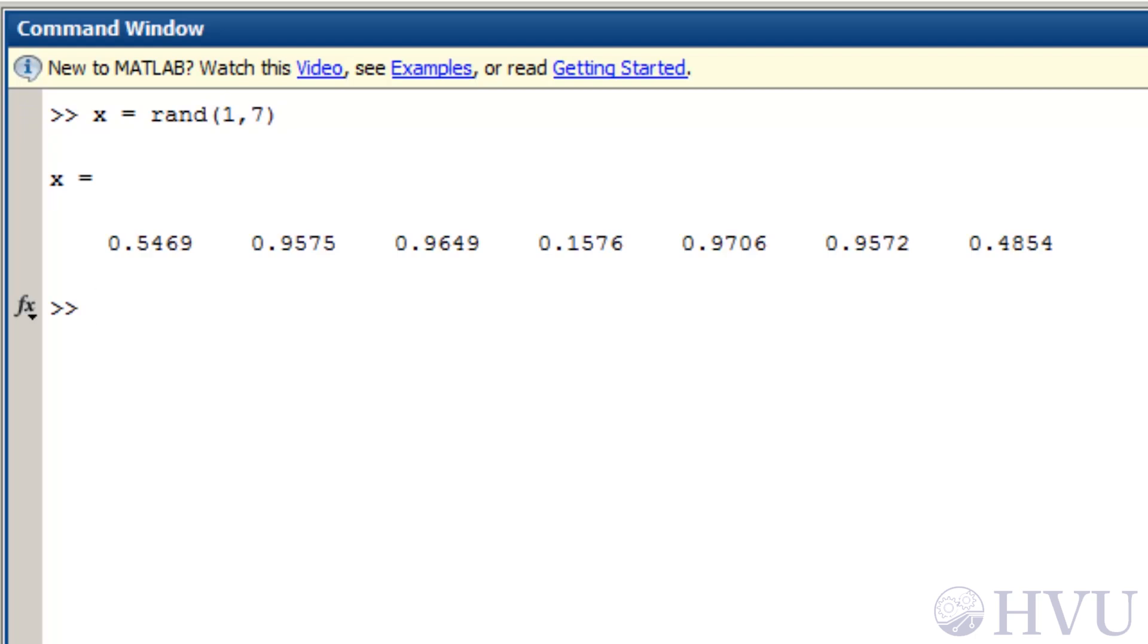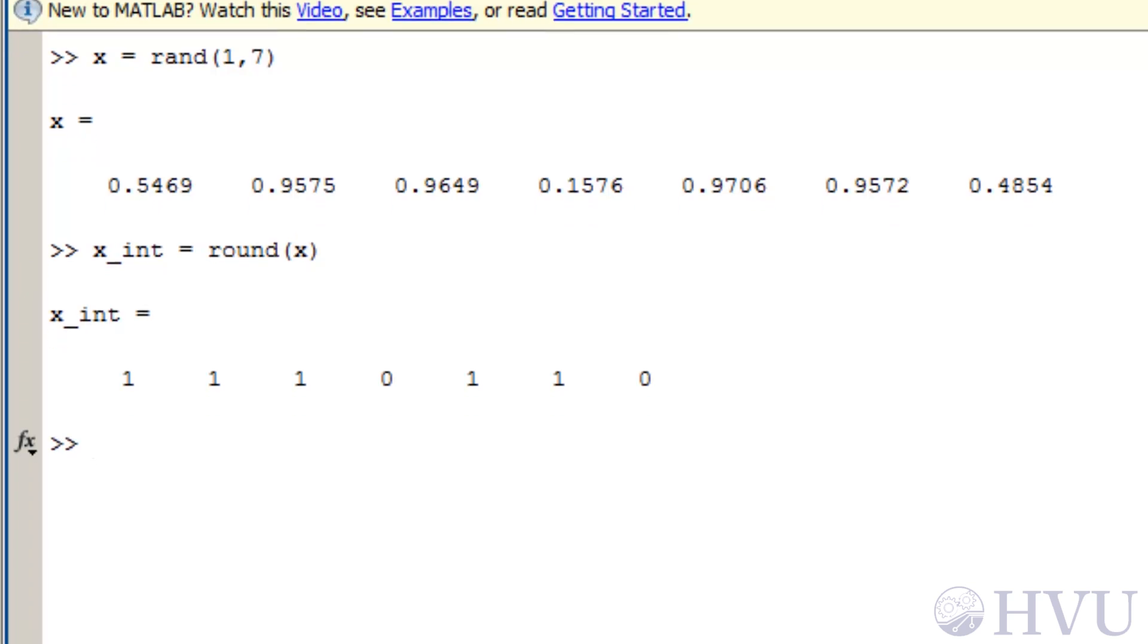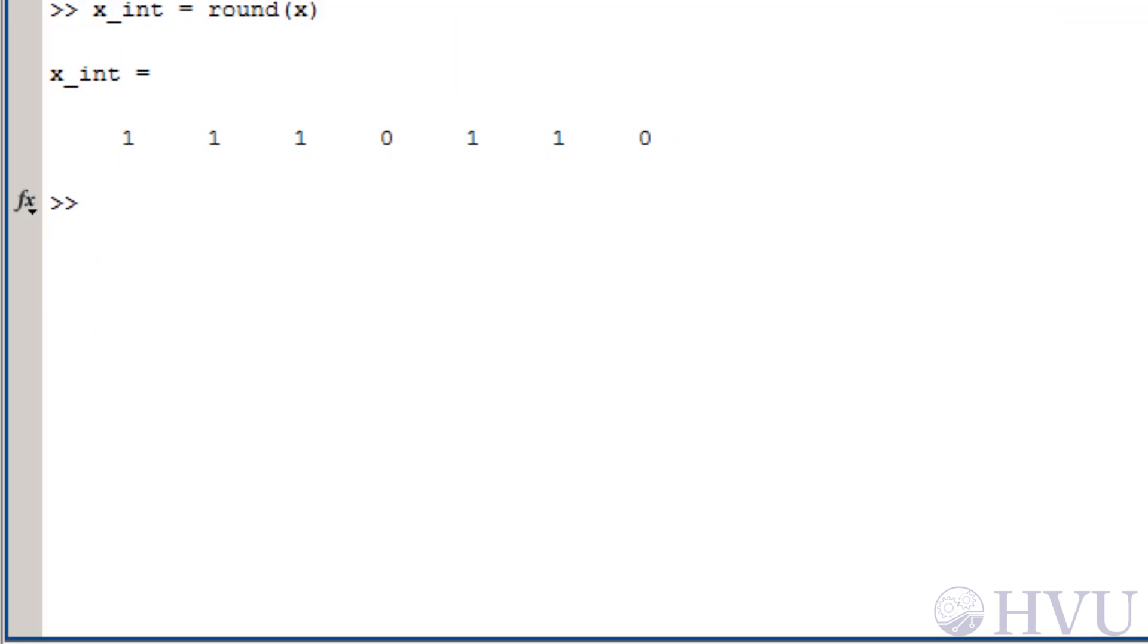Next, I'll round these numbers to the nearest integer by using the ROUND command. So I'll type x underscore INT equals ROUND of x. I end up with an array containing only 1s and 0s. These can be converted to LOGICAL values with the LOGICAL command. So x underscore LOGIC equals LOGICAL of x underscore INT. Any non-zero values become LOGICAL 1s and 0 values become LOGICAL 0s.